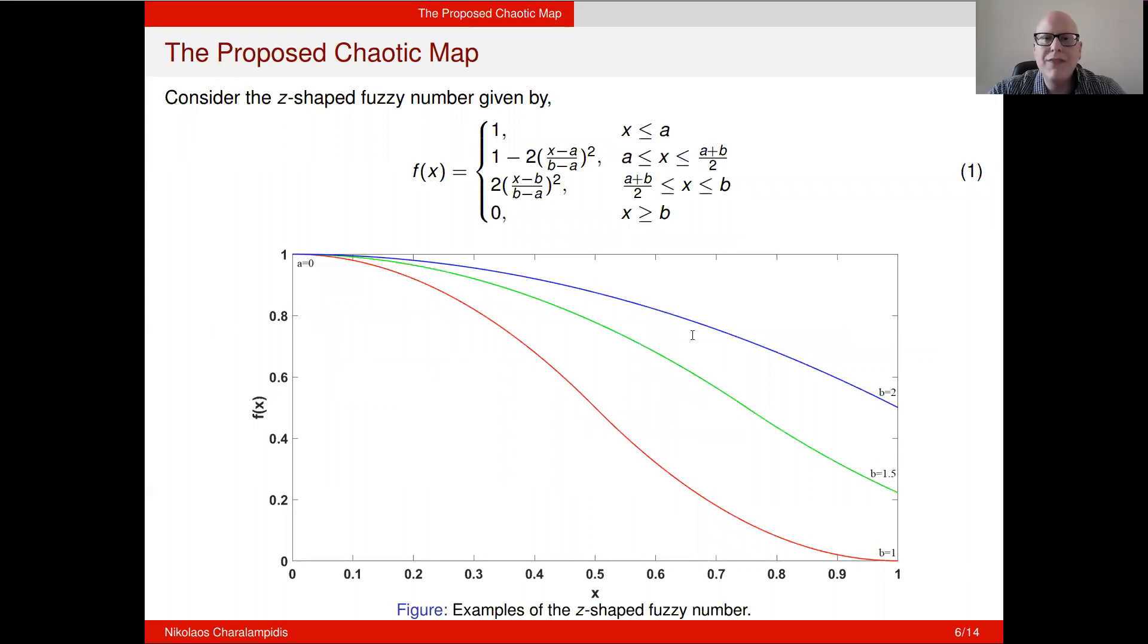So, motivated by this, we designed a new piecewise chaotic map based on the Z-shaped fuzzy number. To do that, let's first consider the Z-shaped fuzzy number, which is given by this equation. And here below, you can see examples of the Z-shaped fuzzy number and how this function behaves. Essentially, as you can see, the A parameter is the parameter that shows the beginning of the slope and the B parameter indicates the end of the slope.